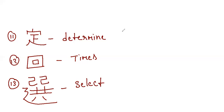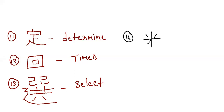Next is the kanji for rice. It has six strokes: one, two, three, four, five and six. This is the kanji for rice.